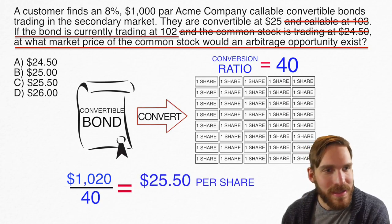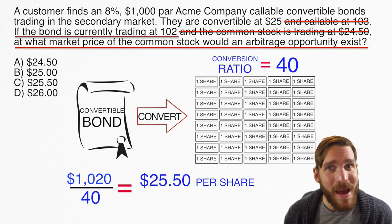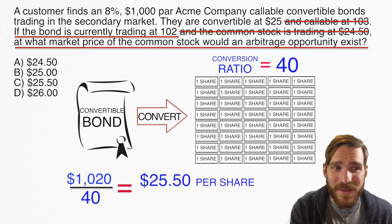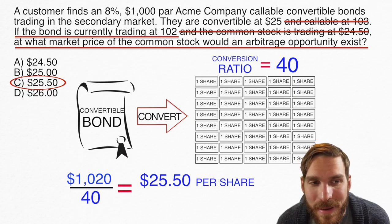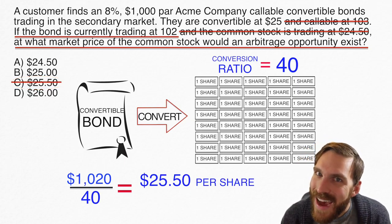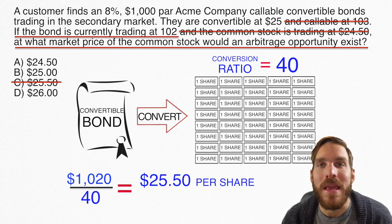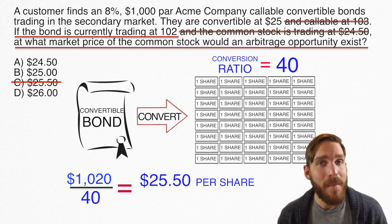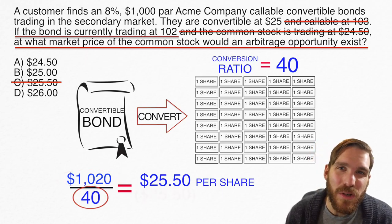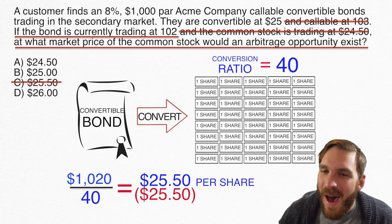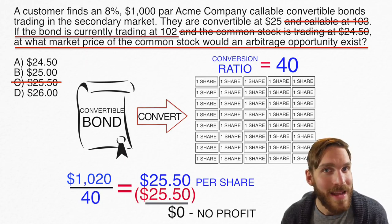I end up with 40 shares of stock, having paid $1,020 overall. Now, I might get excited because I see $25.50 in the answer choices — but don't fall into that trap. If I choose that answer, I'm only breaking even. If I buy the bond for $1,020, convert into 40 shares, and sell those shares at $25.50, I'm back to zero — no profit, no loss. That is not the focus of this question; they want us to find where the instantaneous profit is.